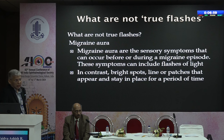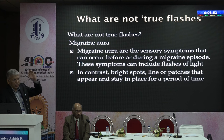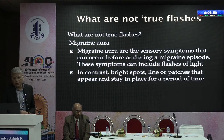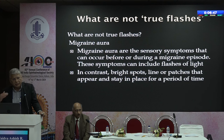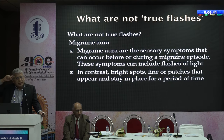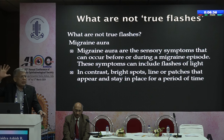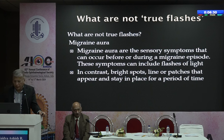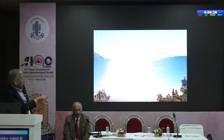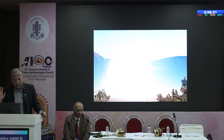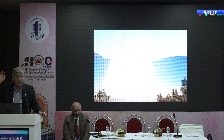What are NOT true flashes? In a migraine patient, flashes occur because of constriction of blood vessels — not directly because of stimulation of photoreceptors. These are sensory symptoms. Migraine aura can happen before or after the headache. These appear as zigzag lines, may be colorful, and the patient may say they cannot see in a particular field. The patient sees red, green, and yellow lights in a zigzag fashion — this is not because of pull on the retina and is not what you are worried about.